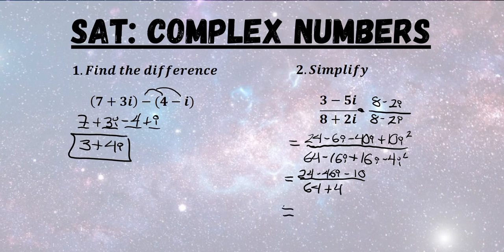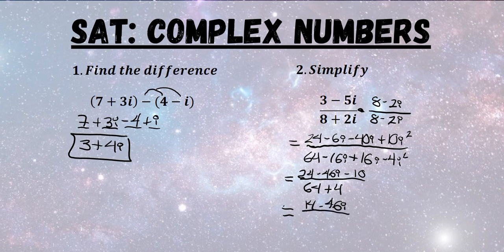Next we're going to combine like terms again. 24 minus 10 is going to be 14. And then minus 46i divided by 64 plus 4 is 68.